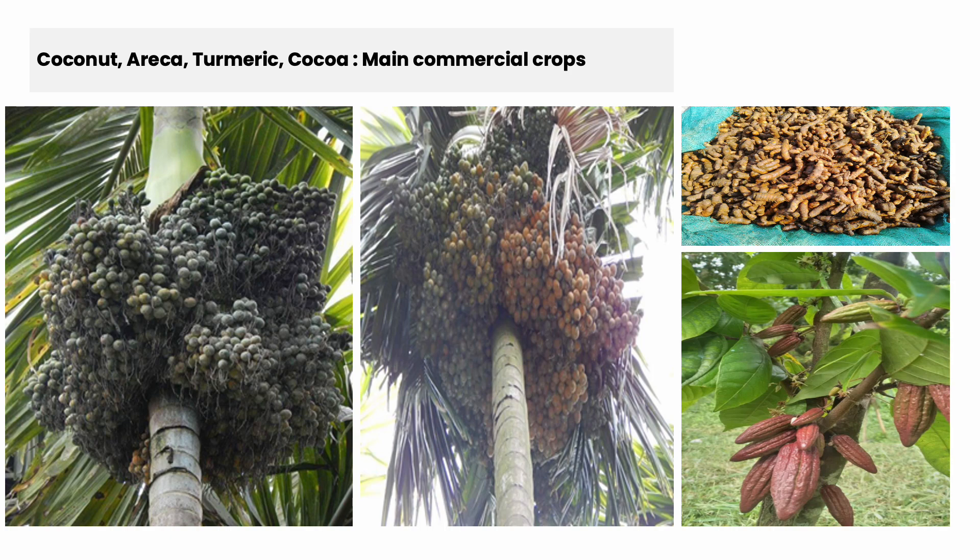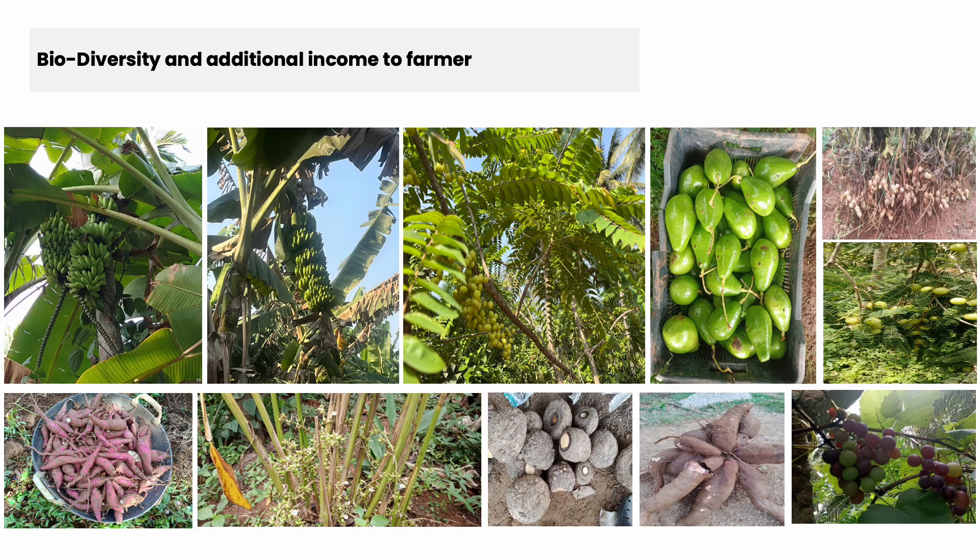Apart from the main crop, we are also generating a lot of income from biodiversity crops like banana, nelly, avocados, gooseberries, and a lot of root crops. I will run the Excel sheet later to show the economics.